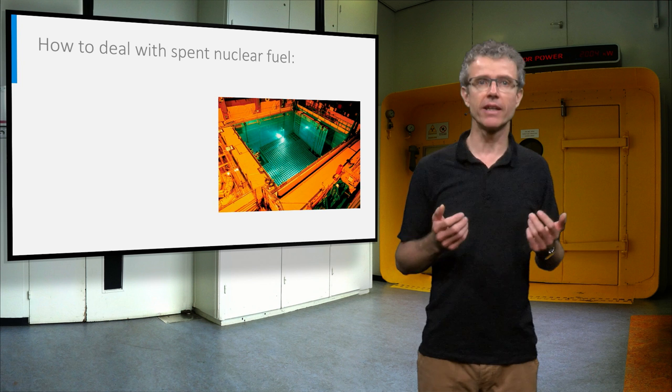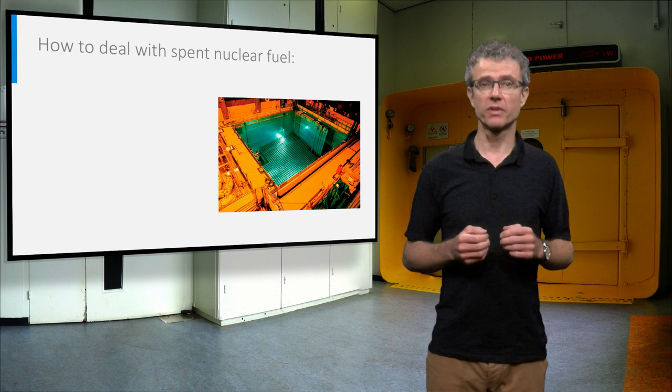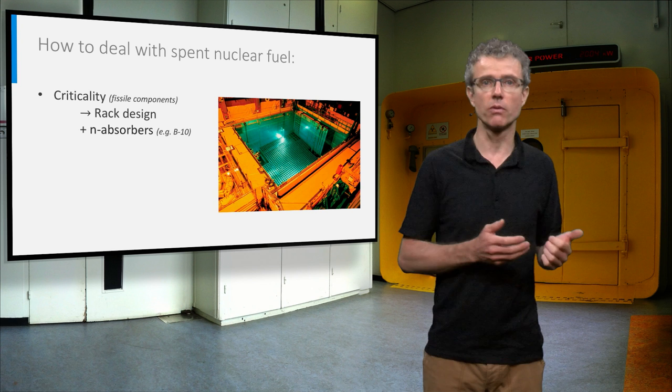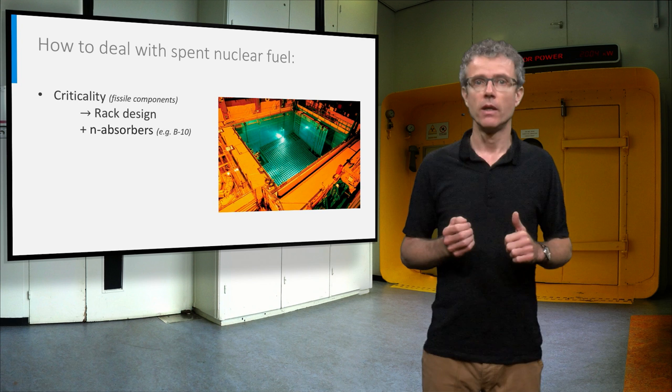The characteristics of the spent nuclear fuel define how we can deal with it in a safe and responsible way. Spent fuel still contains fissile material, so we have to store it in a configuration that guarantees a sub-critical system. That is why the spent nuclear fuel is stored in special racks, with eventually the use of neutron absorbers, for example boron-10.